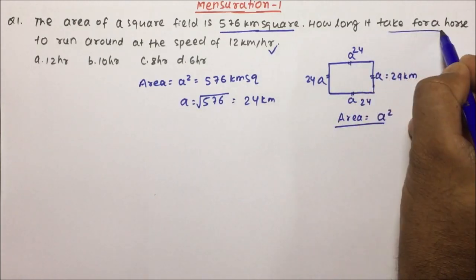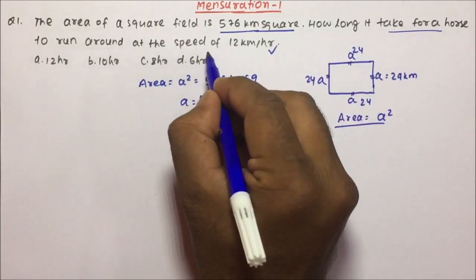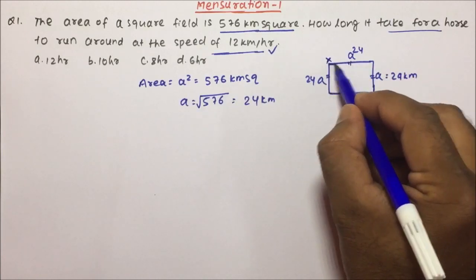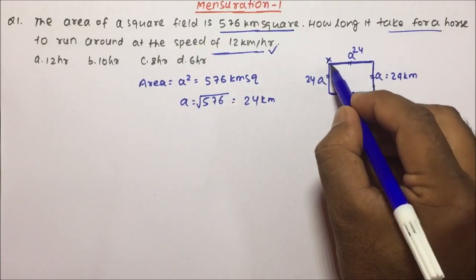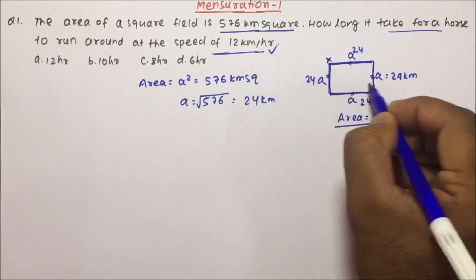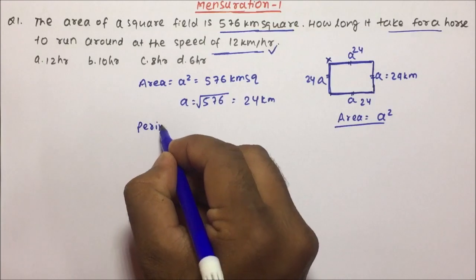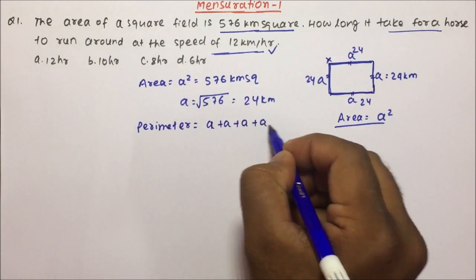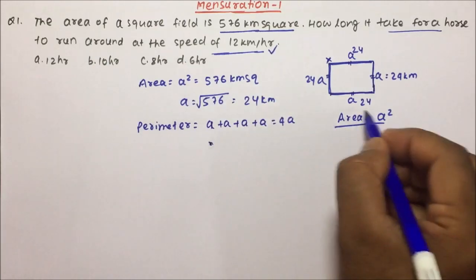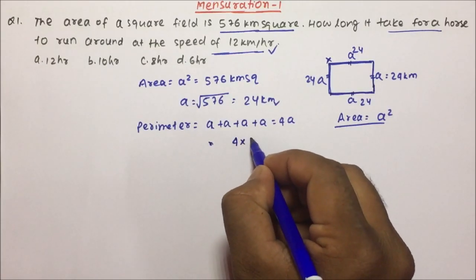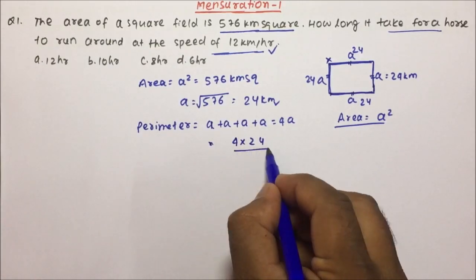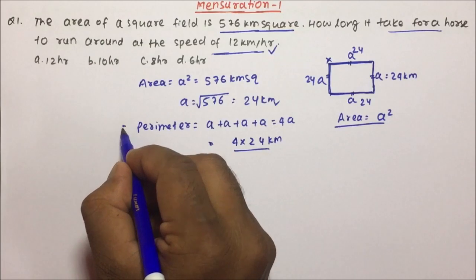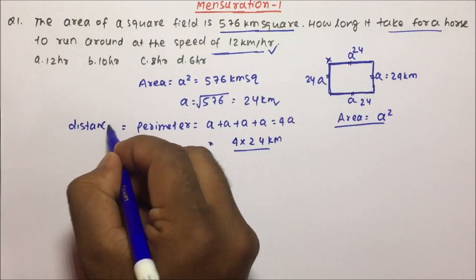Now what is the question asking? How long will it take for a horse to run around at the speed of 12 km per hour? The horse starts from one corner and runs all four sides, then comes back. So the total distance the horse covers is nothing but the perimeter — that is a + a + a + a, which is 4a. I know the value of a, so perimeter = 4 × 24 km. This is the distance of the square field.